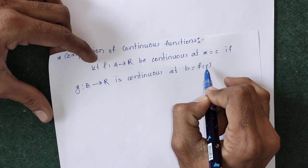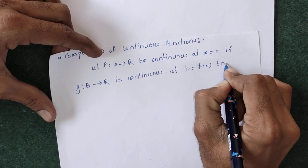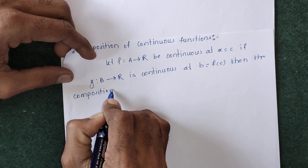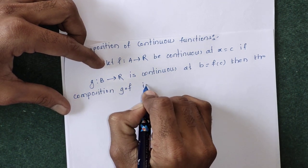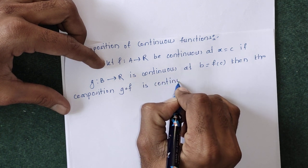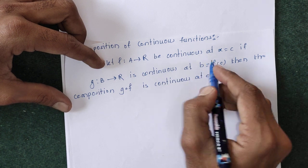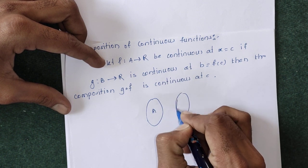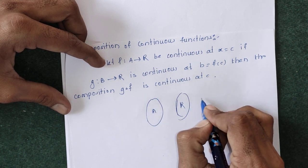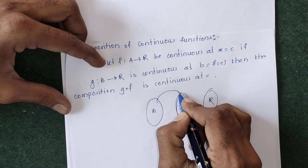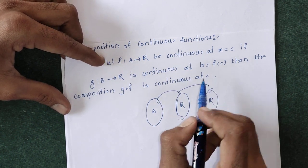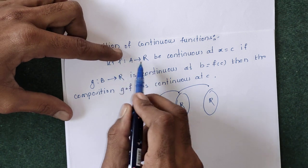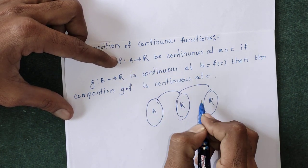If g is continuous at point f(c), then the composition g∘f is continuous at c. That is, function f from A to R and B is a subset of R, and function g from set B to R — both functions are continuous. Then their composition g∘f is defined, where we first apply function f from A to R.